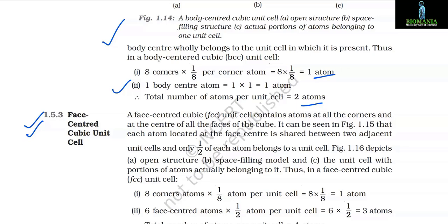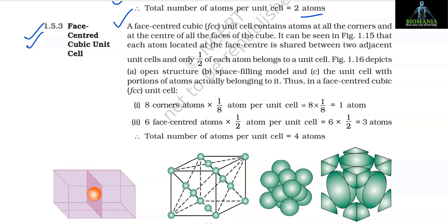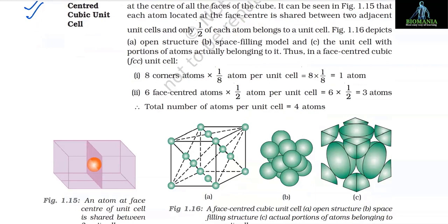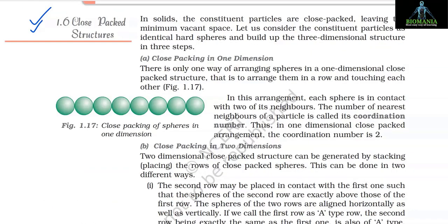1.5.3 Face-Centered Cubic (FCC) Unit Cell. An FCC unit cell contains atoms at all corners and at the center of all faces. Each atom at a face center is shared between two adjacent unit cells, so only 1/2 of each face-centered atom belongs to a unit cell. Thus in an FCC unit cell: 8 corner atoms × (1/8) = 1 atom; 6 face-centered atoms × (1/2) = 3 atoms. Total number of atoms per unit cell = 4 atoms.